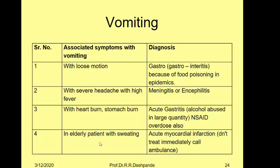Vomiting in an elderly patient with profuse sweating — this is very serious. The patient around 40-60 years old suddenly starts vomiting with sweating all over the body — this is because of acute myocardial infarction. If not treated, it is life-threatening. Call ambulance 108 in Maharashtra state of India to take the patient to the ICU or CCU.